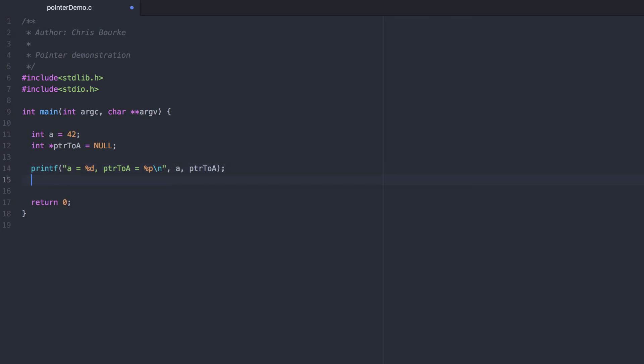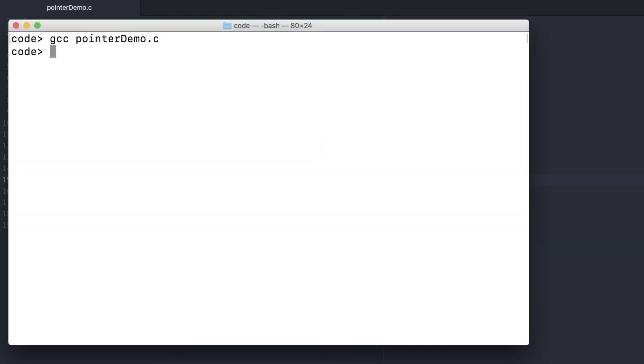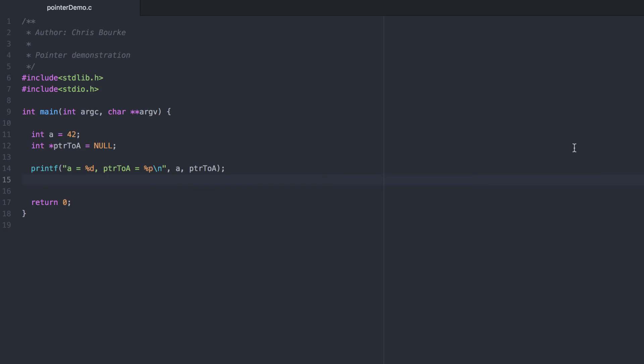The %p is a placeholder value that will format a pointer value. Since it's initialized to null, it has a value of zero. Let's try to dereference it to see what's stored at null.